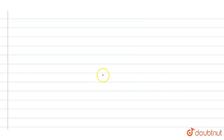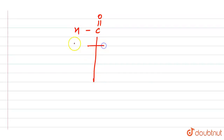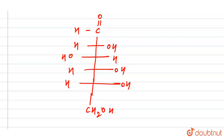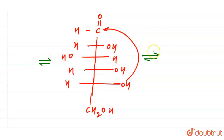Let's see the structure. Here we have C double bond O, then H, OH, OH, H, OH, H, OH, and CH2OH. What happens is this bond connects to this position and we get the formation of the cyclic compound.